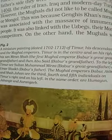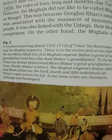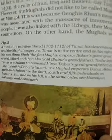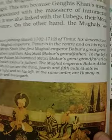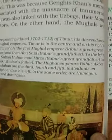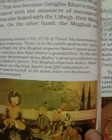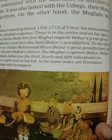Timur was the ruler of Iran, Iraq, and modern-day Turkey. However, the Mughals did not like to be called Mughals, because Genghis Khan's memory was associated with the massacre of innumerable people. It was also linked with the Uzbeks, their Mughal competitors. On the other hand, the Mughals were proud of their Timurid heritage.